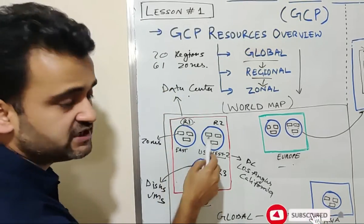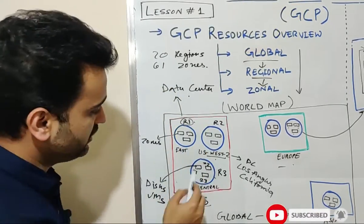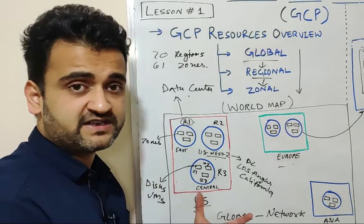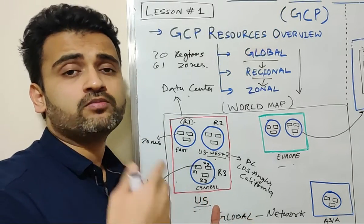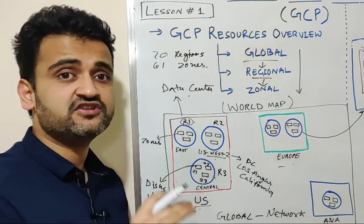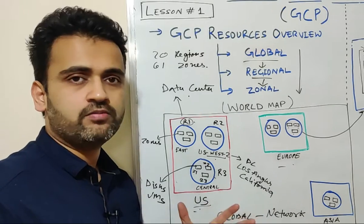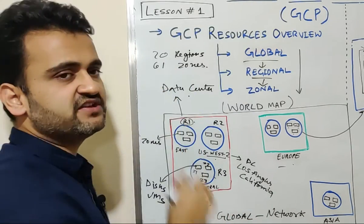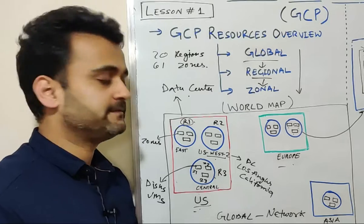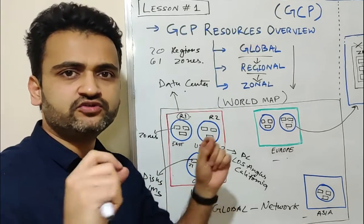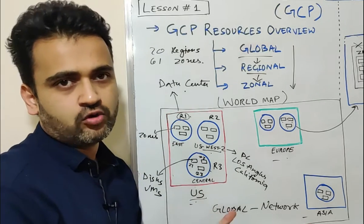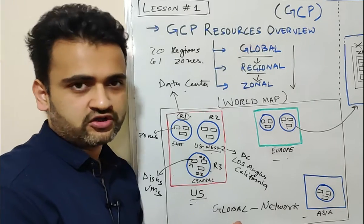Suppose in US we have three different regions: R1, R2, and R3. Within that particular region, we have multiple zones. Every region, especially in case of GCP, would have three or more zones. In today's world, Google has 20 regions installed across the globe in different parts of the world, and these 20 regions are nothing but 20 data centers. Within that data center or region, we have multiple zones, and every resource you utilize — whether at the front end or running at the back end — falls under either a global, regional, or zonal resource.